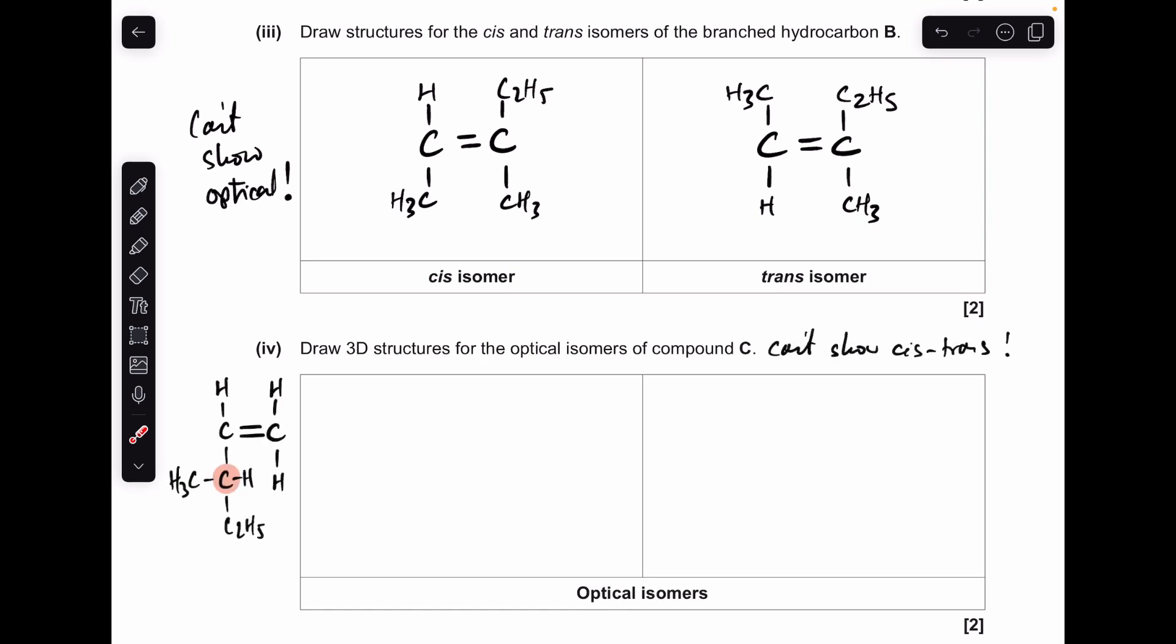And moving on to compound C. Remember, this one can show optical but can't show cis-trans. So now we do need a chiral centre, so I've got one there. It can't show cis-trans, so I've got to have an identical atom or group of atoms, atoms in this case, on one of the carbons of the double bond.